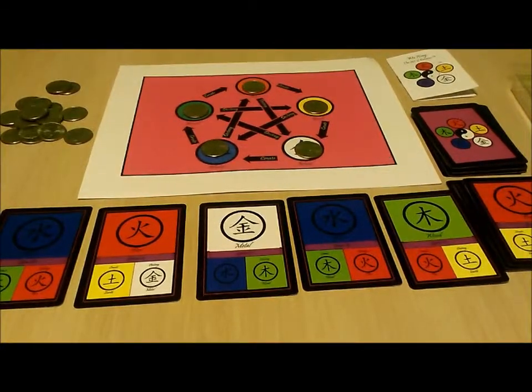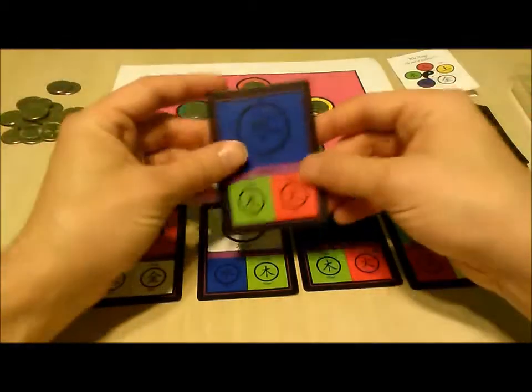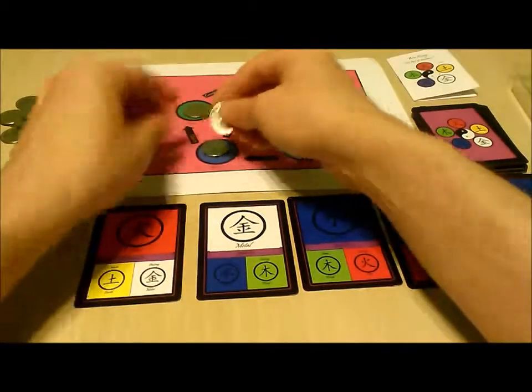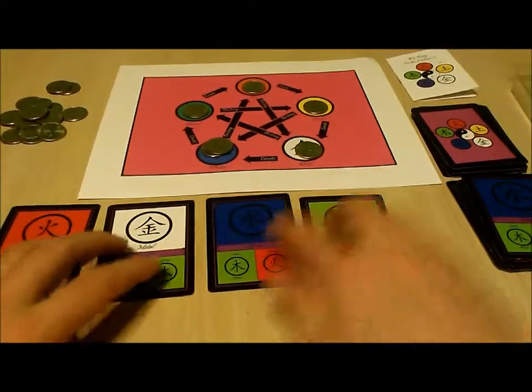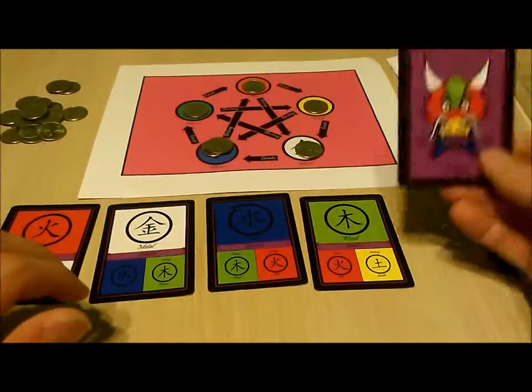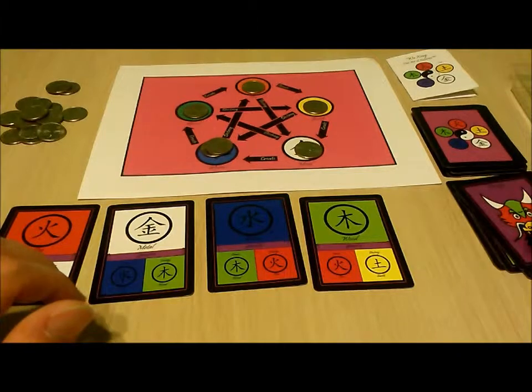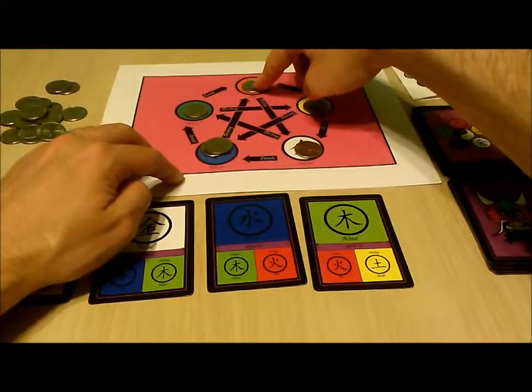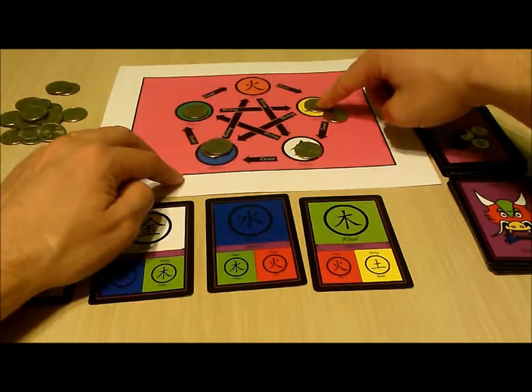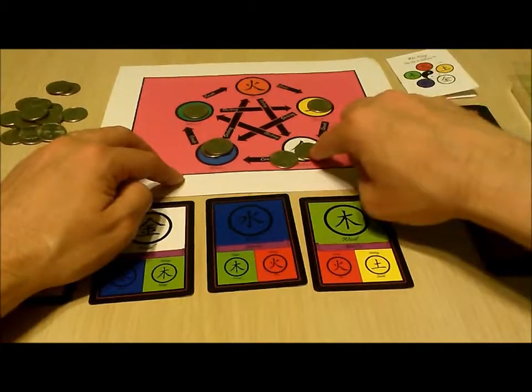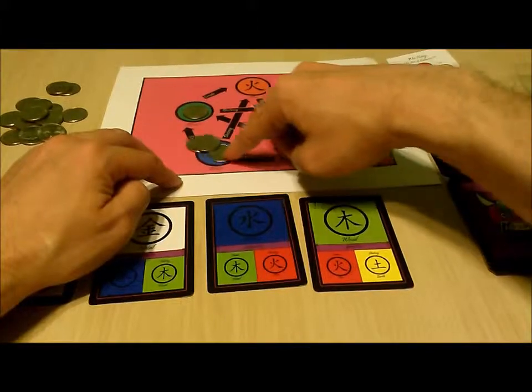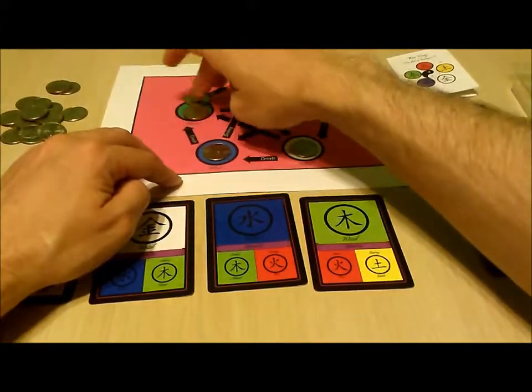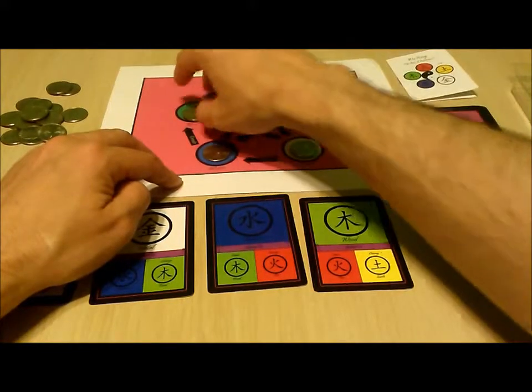And looking at what we have we will play a water card to create a water token. We draw another card and we get the dragon. So the dragon is discarded and we move the tokens from the fire space to the earth space, the tokens from the earth space to the metal space, the tokens from the metal space to the water space, the tokens from the water space to the wood space, and the tokens from the wood space to the fire space.